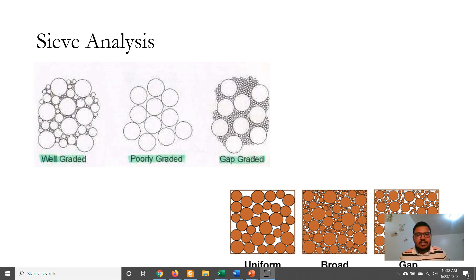These are the visual illustrations of well graded, uniformly or poorly graded, and gap graded soil.